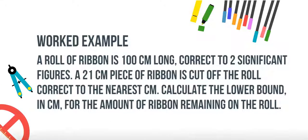Worked example: A roll of ribbon is 100 cm long, correct to two significant figures. A 21 cm piece of ribbon is cut off the roll, correct to the nearest cm. Calculate the lower bound in cm for the correct amount of ribbon remaining on the roll.